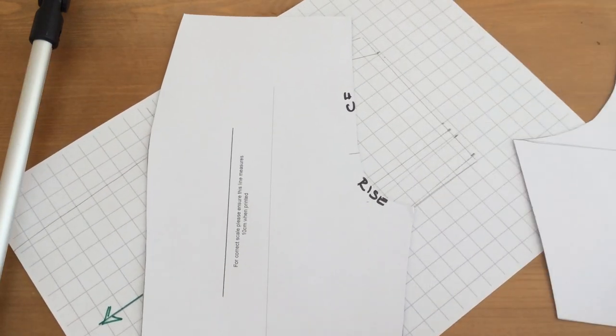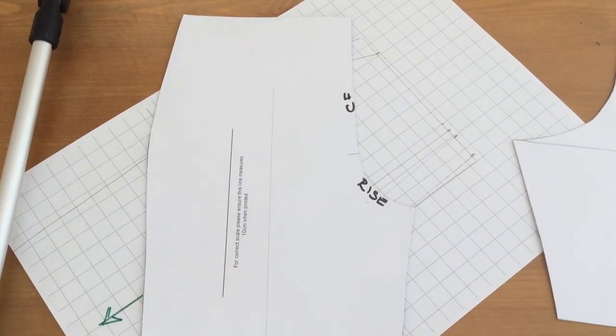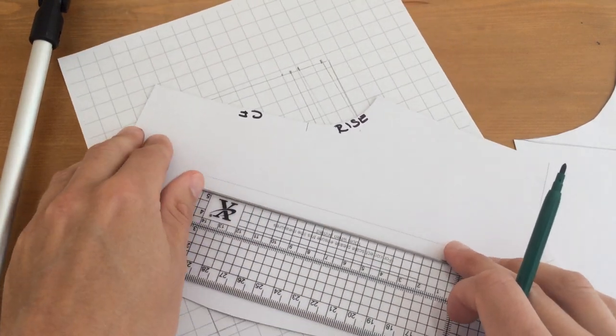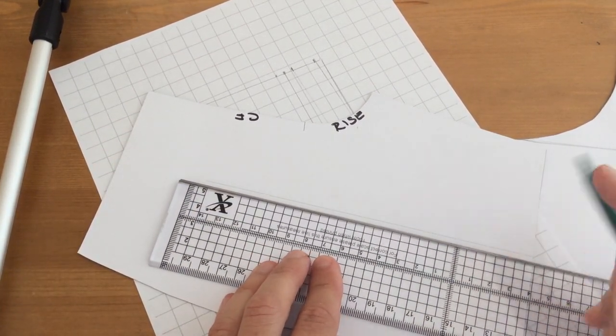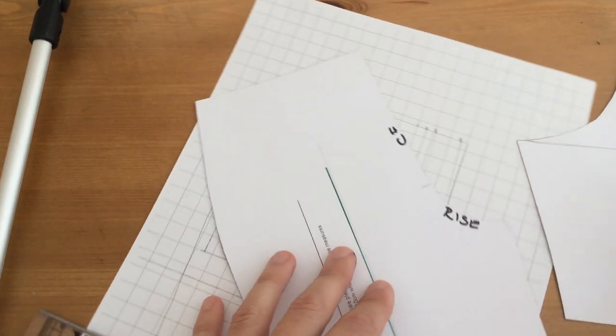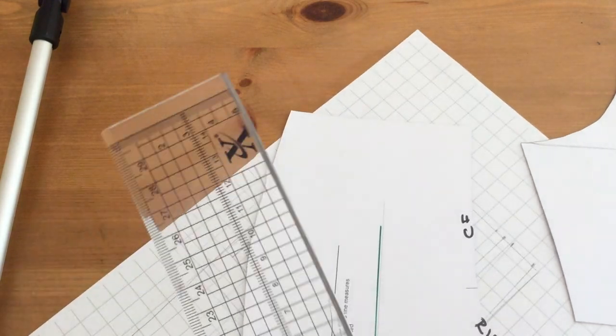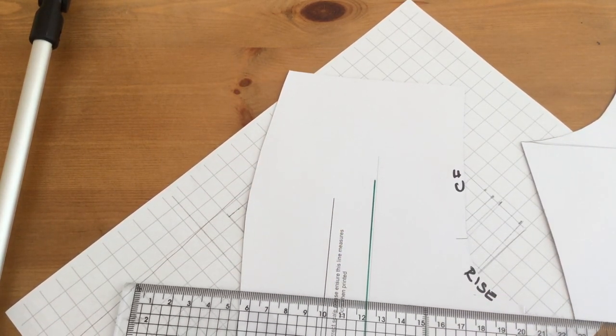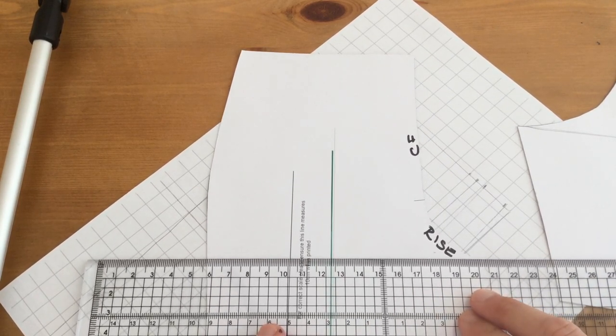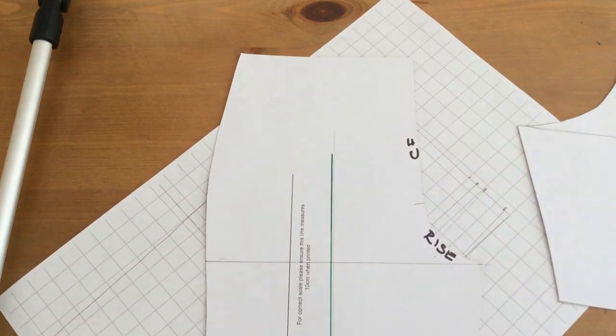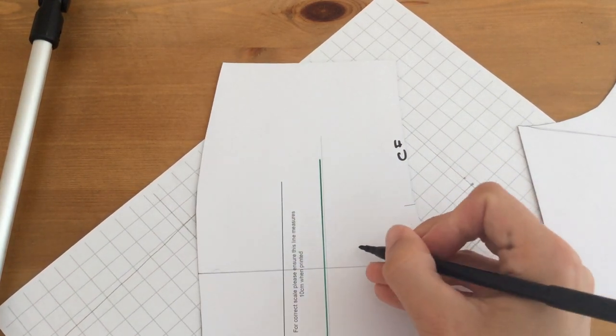That's true of the front as well. So if we put that onto our grain line and then square across, that becomes the front seat line.